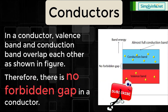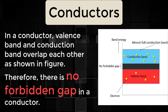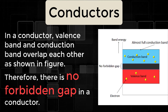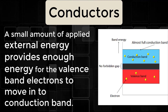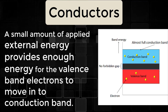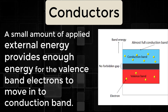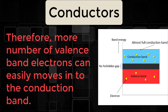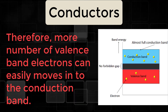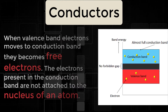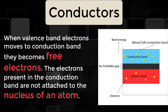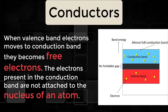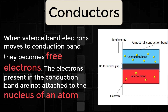In a conductor, the valence band and conduction band overlap each other. Therefore, there is no forbidden gap in a conductor. A small amount of applied external energy provides enough energy for the valence band electrons to move into the conduction band. Therefore, more number of valence band electrons can easily move into the conduction band. When valence band electrons move to the conduction band, they become free electrons. The electrons present in the conduction band are not attached to the nucleus of an atom.